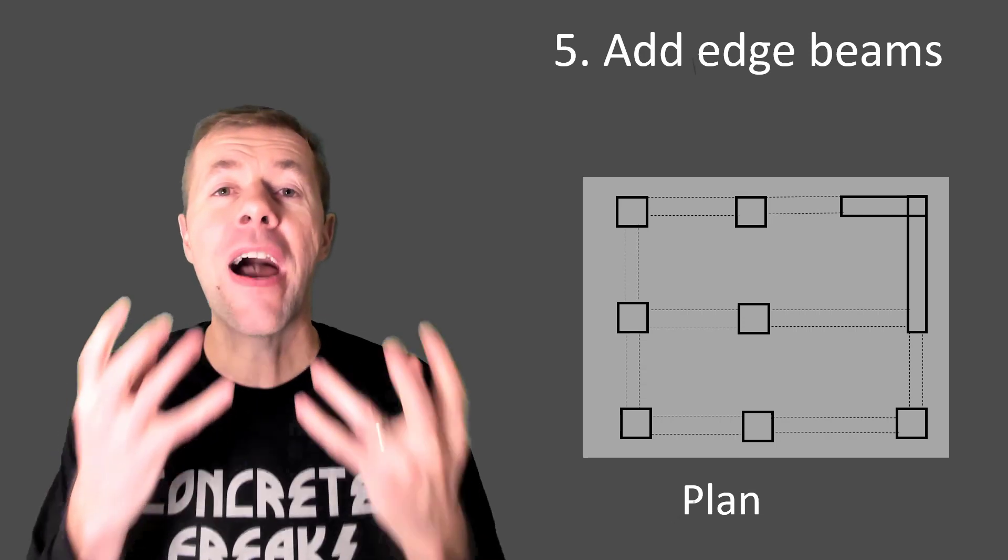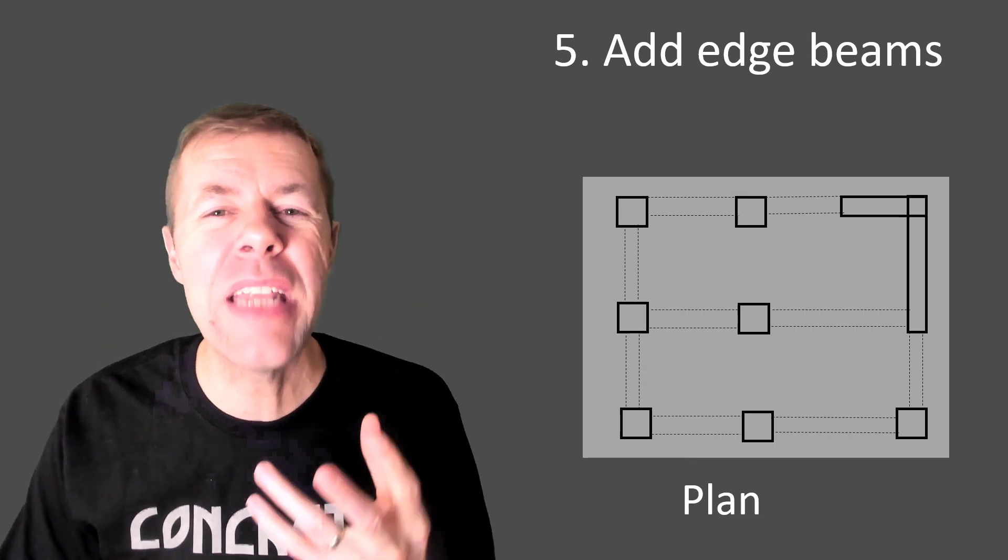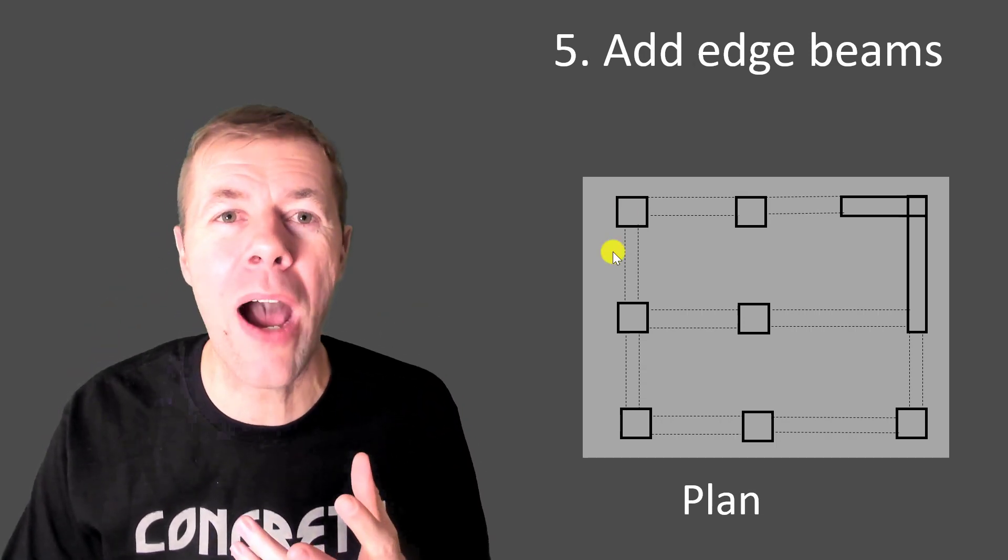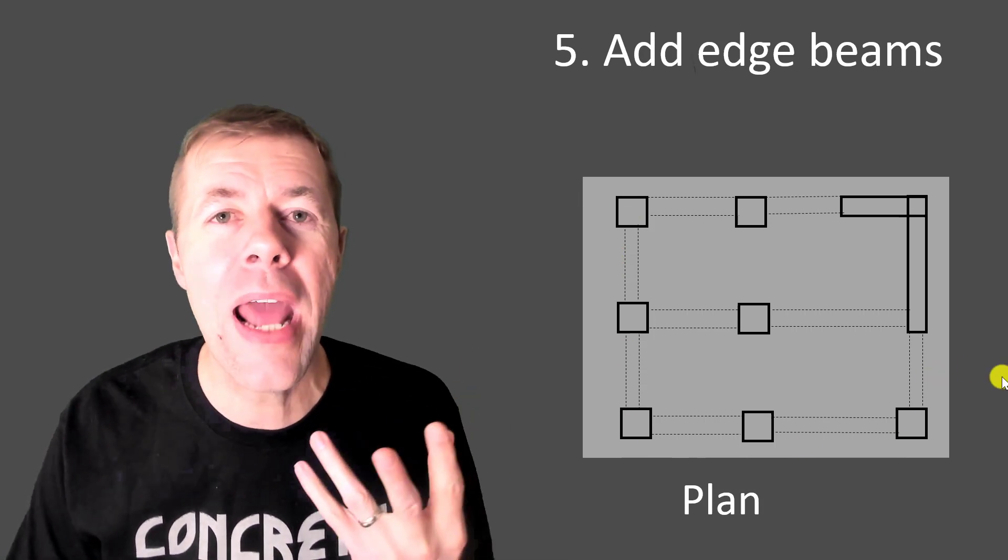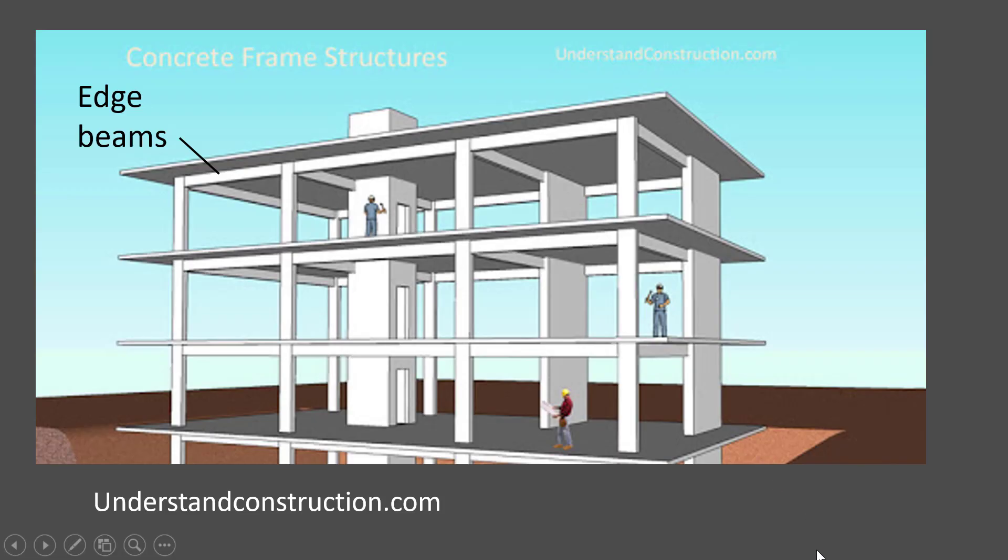And then the final step is to add edge beams. All the way around the outside of your building. You add edge beams. They have them here. Why do you do that? Well it helps.